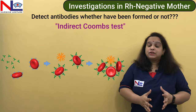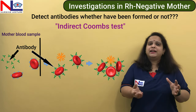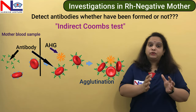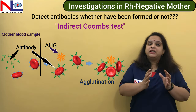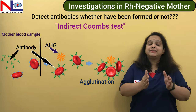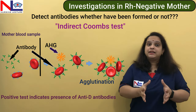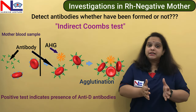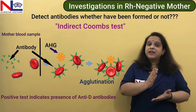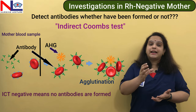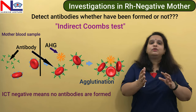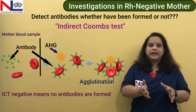In the Coombs test, we take a sample from the mother, add anti-human antibody to it, and check for agglutination. If agglutination — blood clumping — occurs, the test is positive, meaning the woman is sensitized and has already formed antibodies against the fetal Rh antigen. If negative, it means the woman is not yet sensitized and has not formed any antibodies.